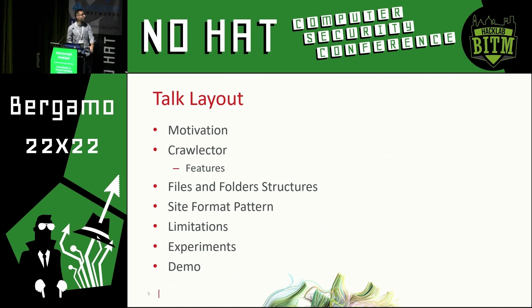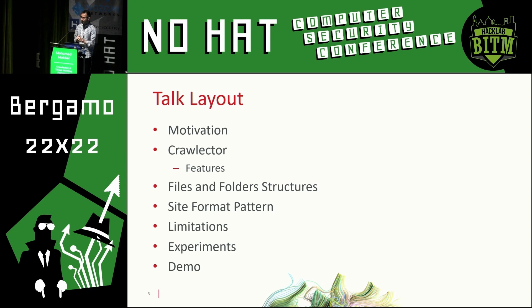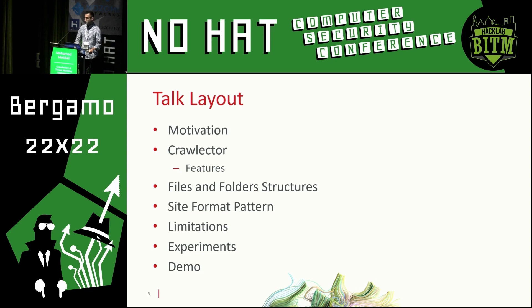So the talk layout consists of the following key steps. First, the motivation — why did I write this framework in the first place? Then Crowlector itself — the framework, the features in terms of design, architecture, and so on. We'll take a couple of slides to talk about the files and folder structure, since it consists of a lot of files, folders, and configuration information. Then the site format patterns, the limitations which are design choices, experiments to prove the effectiveness of the framework, and then a demo if I have any time left.